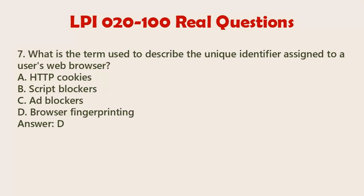Question 7. The correct answer is D: Browser Fingerprinting. Browser Fingerprinting is the term used to describe the unique identifier assigned to a user's web browser based on various characteristics and attributes of the browser and its environment. These characteristics can include the browser version, installed plug-ins, screen resolution, operating system, language settings, and other parameters. Browser Fingerprinting is often used by websites and advertisers for tracking and identifying users across different browsing sessions.